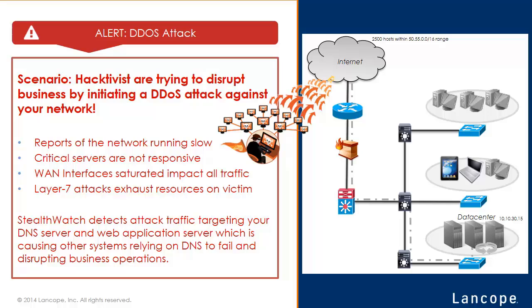By collecting flow data from the entire network, it allows StealthWatch to follow the packet as it passes through within the network. There are different types of denial-of-service attacks, such as a Layer 7 attack, which is not necessarily high bandwidth, but targets the resources on a server to prevent the server from servicing any other request.